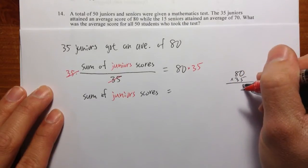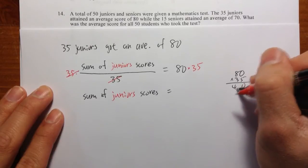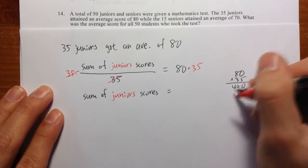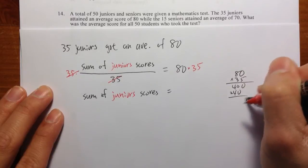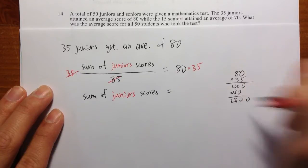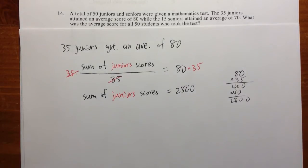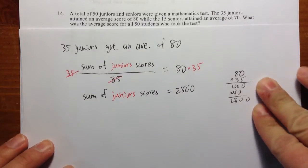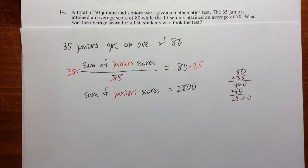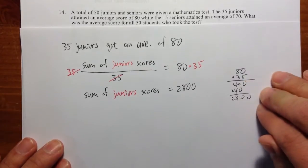So we can do that real quick on the side, 80 times 35. 5 times 0 is 0, 5 times 80 is 40, and then 3 times that is 0, 3 times that is 24. So it's 0, 0, 8, and 2, 2800. So get used to using the scratch paper, do this kind of calculation again. I don't think the test will allow you to use the calculator.